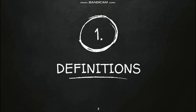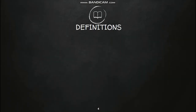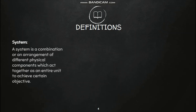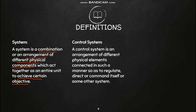Starting with some basic definitions, the first one is 'system.' A system is a combination or an arrangement of different physical components. Physical components are those which we can see or feel. A combination or arrangement of such components to achieve a certain objective constitutes a system. Then, what is a control system?